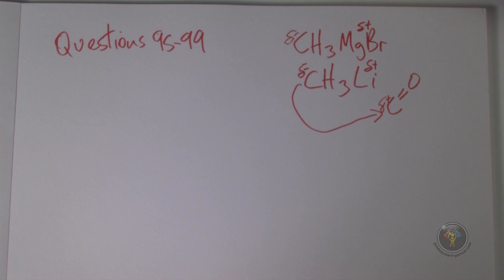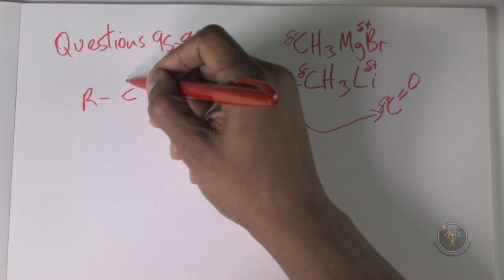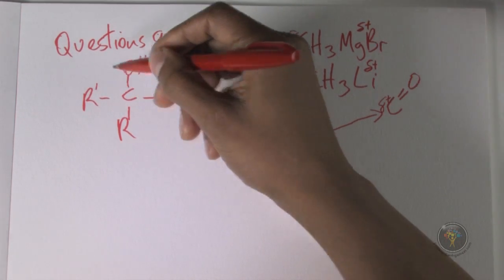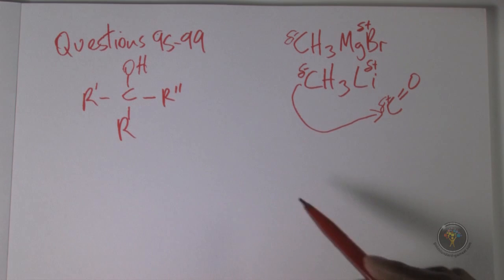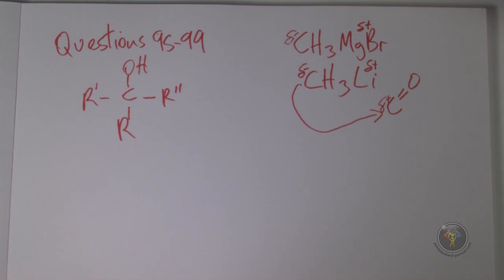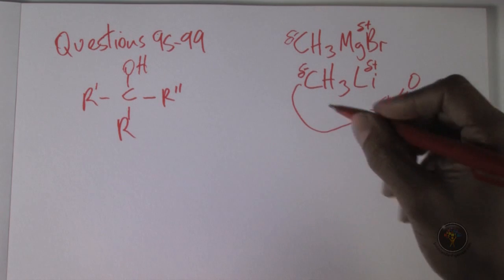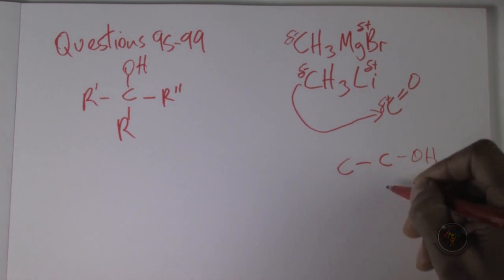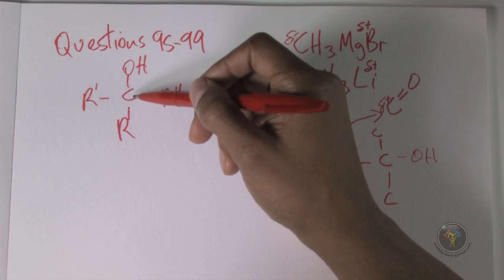Figure 1 shows an alcohol with labels R-prime, R, and R-double-prime — just labels to follow where things end up during the reaction. Question 95 asks: a secondary alcohol is produced by reacting a Grignard reagent. A primary alcohol has one carbon attached to the alcohol group, a secondary has two, and a tertiary has three.